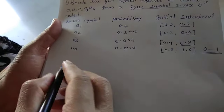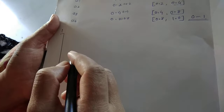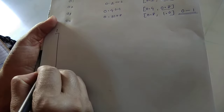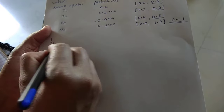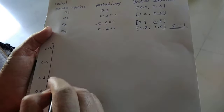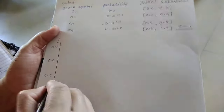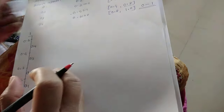Now we have to encode this. You have to draw a structure showing an interval starting from 0 and ending at 1. Then assign the initial probability values: 0.2 for a1, then 0.2 for a2, then 0.4 for a3, then 0.2 for a4. This represents the given probability values for each source symbol.